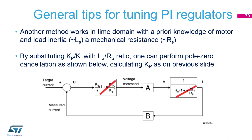The next method for tuning Kp and Ki works in the time domain with an a priori knowledge of the motor and load inertia and mechanical resistance — these are the equivalents of electrical inductance and electrical resistance. By substitution of these ratios in the control loop, we can calculate Kp and Ki as shown on this slide.